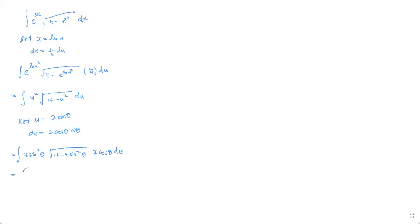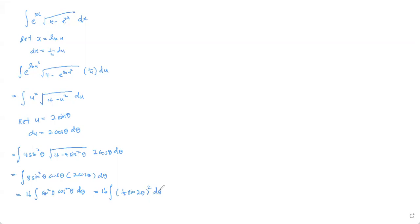Simplifying, we get 8sin²θ · cosθ · 2cosθ dθ, which equals 16∫ sin²θ cos²θ dθ. Using the double angle formula, this simplifies to 16 · ½ ∫ sin²2θ dθ, giving us 4∫ sin²2θ dθ.